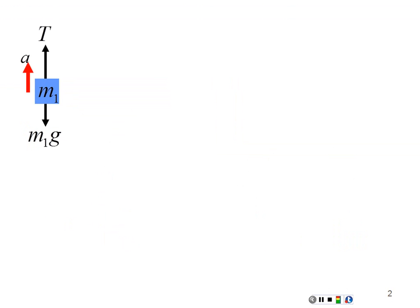Looking at free body diagram number 1 for mass 1, I set up my Newton's Second Law equation. The summation of all forces acting in the Y direction on mass 1 equals M1 times acceleration. My positive direction will be up because that's the direction of acceleration. So that's going to be tension minus M1G. That's my first equation.